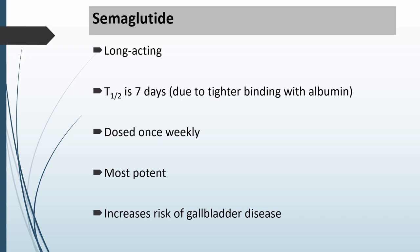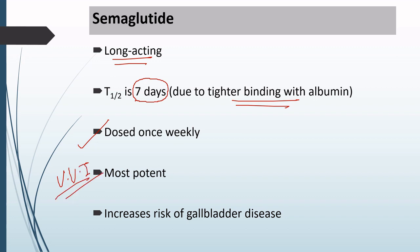The last drug is Semaglutide. Semaglutide is also a long-acting drug with a T-half of 7 days. It is long-acting because it is very tightly bound to albumin, so the free drug available for absorption into the circulation is very low — naturally it is given once weekly. The most potent GLP-1 receptor agonist is Semaglutide. Semaglutide also increases the risk of gallbladder disease.